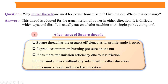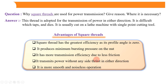The advantages of square threads: square threads have the greatest efficiency as their profile angle is zero, so they produce minimum bursting pressure on the nut. They have more transmission efficiency due to less friction. Because of less friction, their life is more and their efficiency is also great. Square threads transmit power without any side thrust, and they provide smooth and noiseless operation.